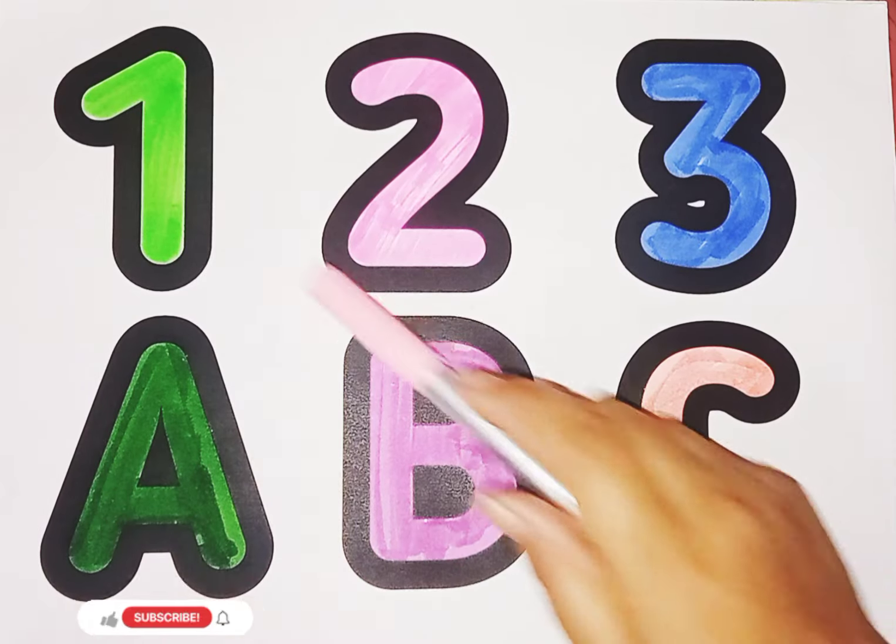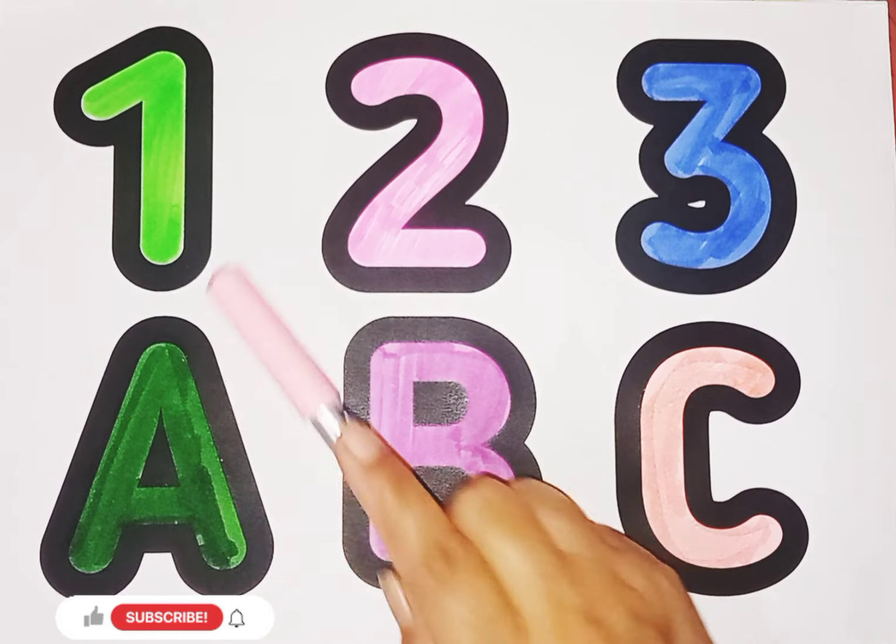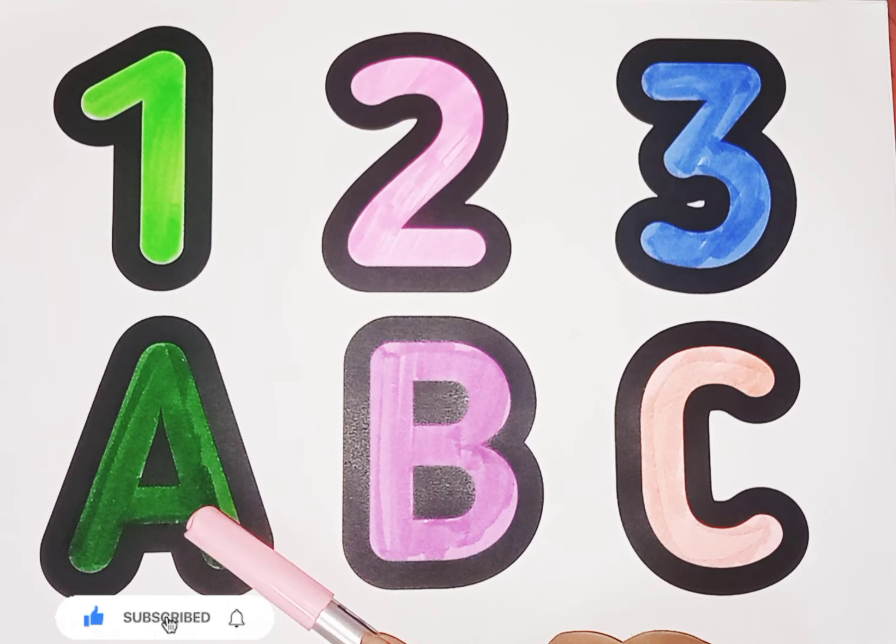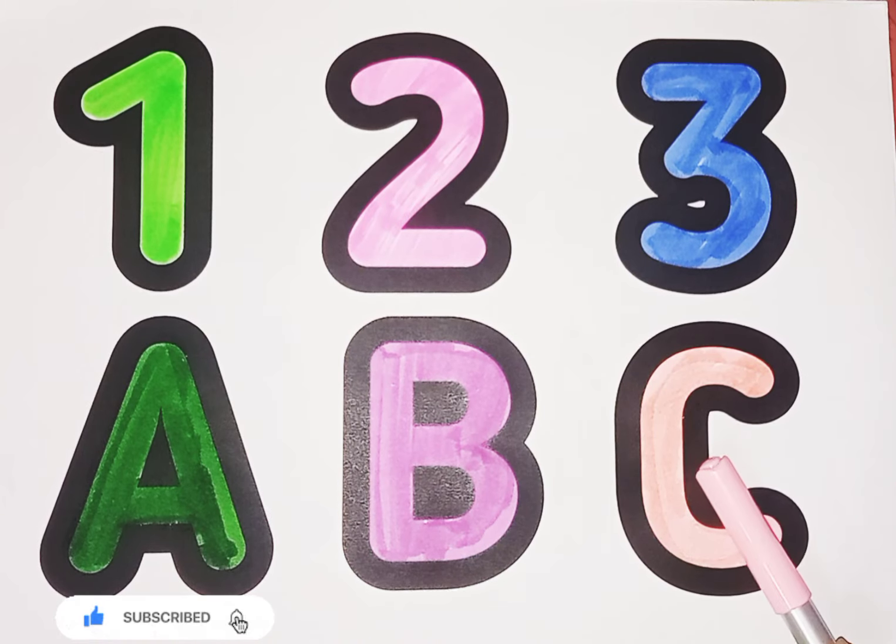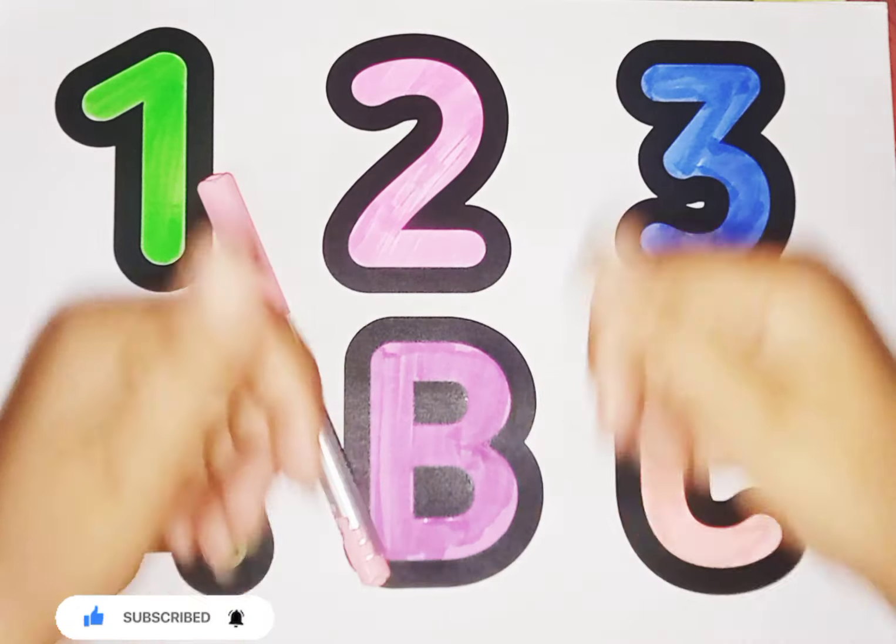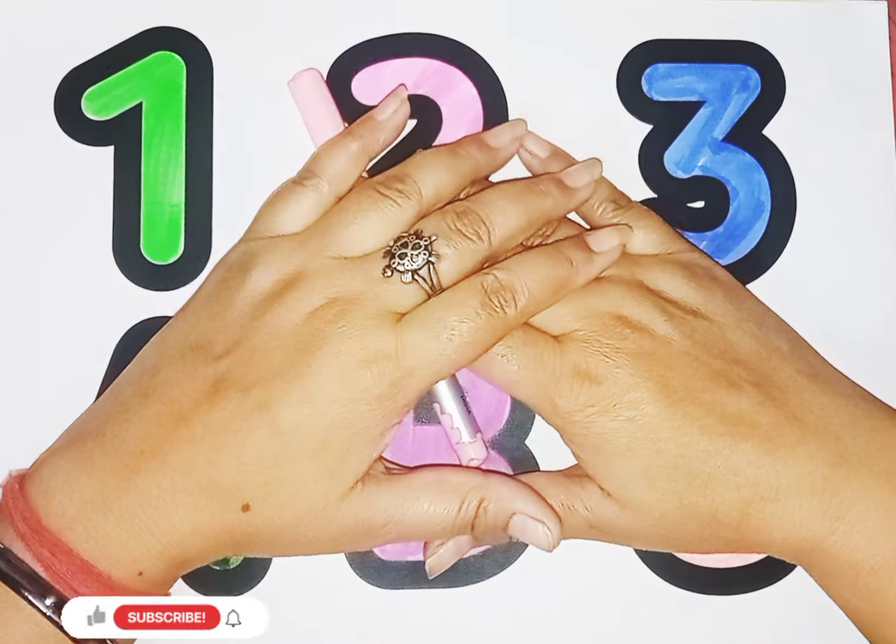So kids, today we learn numbers and alphabet. Number 1, Number 2, Number 3. Alphabet A, B, C. So kids, I hope you like the video. If you like the video, please like and subscribe my channel. See you next video, bye.